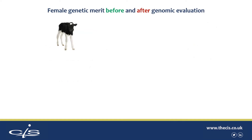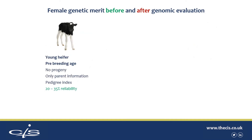That was genetic merit before genomic evaluation. Now we can compare genetic merit before and after genomic evaluation. If we think of a young heifer at pre-breeding age, no progeny, only information from her parents — you might hear the expression pedigree index, which is simply a calculation using information from the parents and grandparents. Again, reliability is 20 to 35%. Typically after genomic testing this effectively doubles to 50 to 65%. So there's a big gain, and that's the big advantage of genomics.